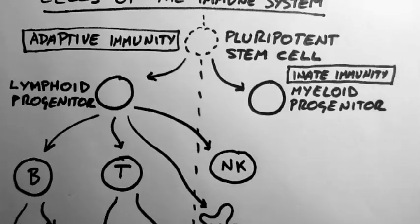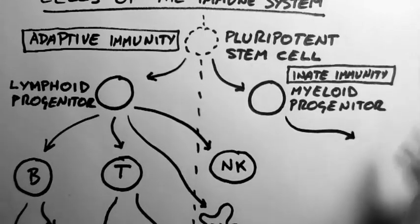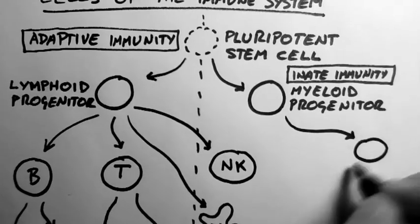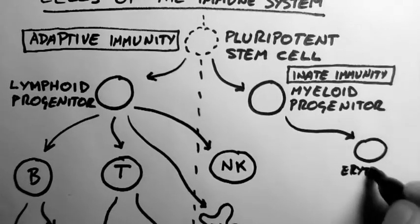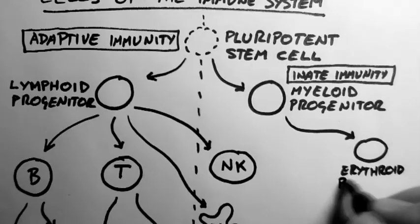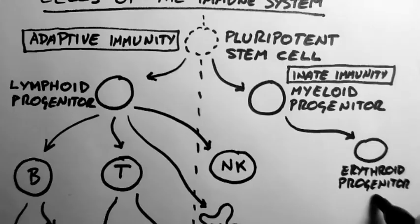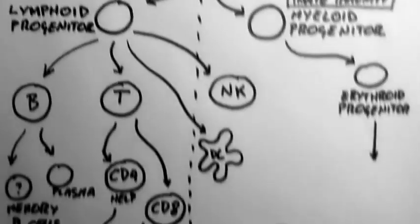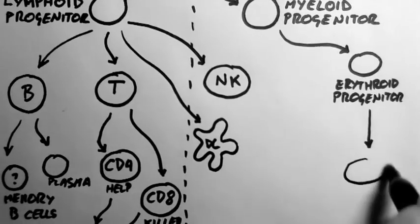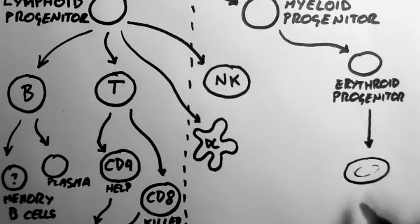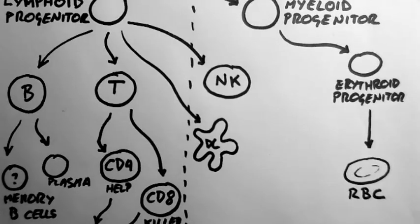First, let's get something out of the way that's got nothing to do with the immune system. The myeloid progenitor can give rise to the erythroid progenitor. Now this gives rise to erythrocytes, also known as red blood cells.